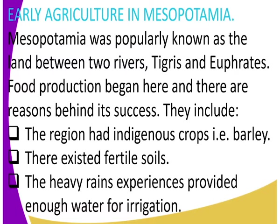What are some of the factors that facilitated early agriculture in Mesopotamia? First we must get to know what Mesopotamia is and where it was found. Mesopotamia was popularly known as the land between two rivers — River Tigris and River Euphrates. These were the two rivers that Mesopotamia lay between.